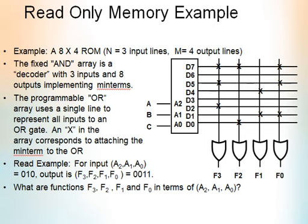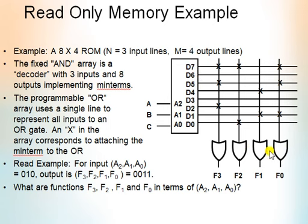This is the example circuit for read-only memory. As mentioned earlier, in read-only memory we have a fixed AND array and a programmable OR array. This fixed AND array is used as a decoder, and the programmable OR arrays are represented as F3, F2, F1, and F0.